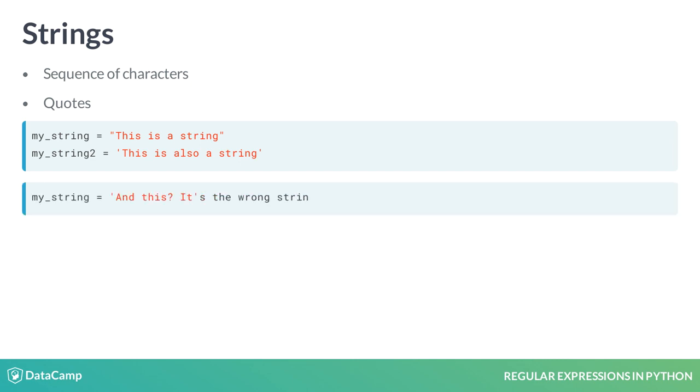If a quote is part of the string, as seen in the code, we need to use the other quote type to enclose the string. Otherwise, Python recognizes the second quote as a closing one.